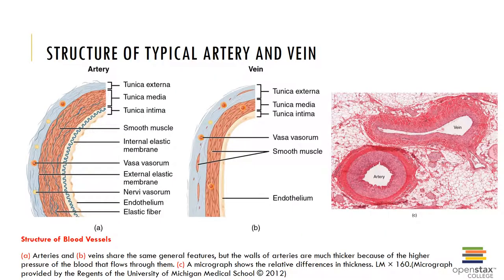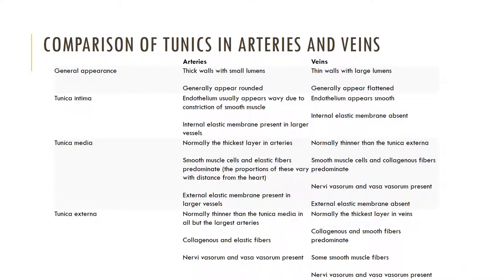Here we can see the structure of a typical artery and vein. In this course you will also be examining the difference of the tunica layers in arteries and veins. Arteries tend to have a round lumen and a relatively thick wall, while veins tend to have a flattened, collapsed, or irregularly shaped lumen with relatively thin walls. The tunica interna of arteries is rippled and possesses an internal elastic membrane; however, the tunica interna of veins is often smooth and the internal elastic membrane is absent.